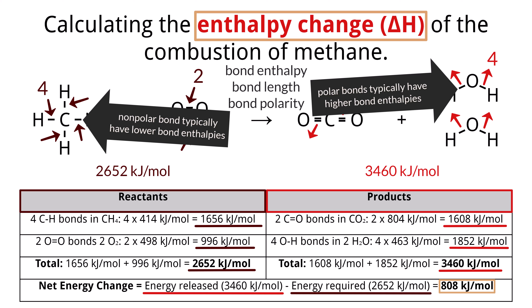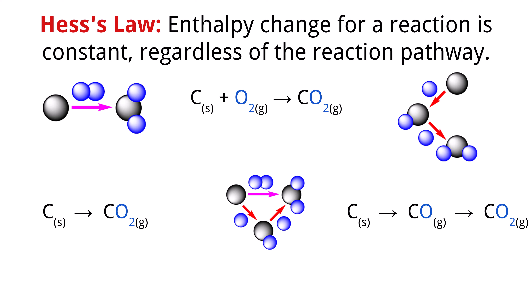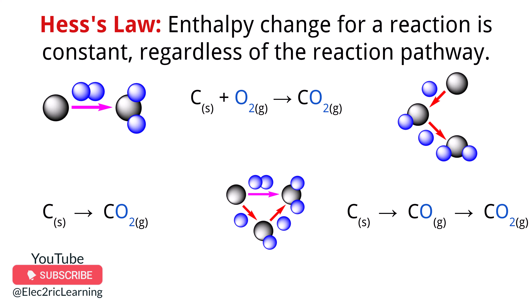Bond length also affects the speed of reactions, as seen in nucleophilic substitutions, where stronger bonds tend to result in slower reactions due to the higher energy required to break them. Over the years, scientists have tabulated bond enthalpy data — often from calorimetry experiments — and found that they can calculate the change in enthalpy, delta H, for any reaction using this data, thereby saving experimental time.